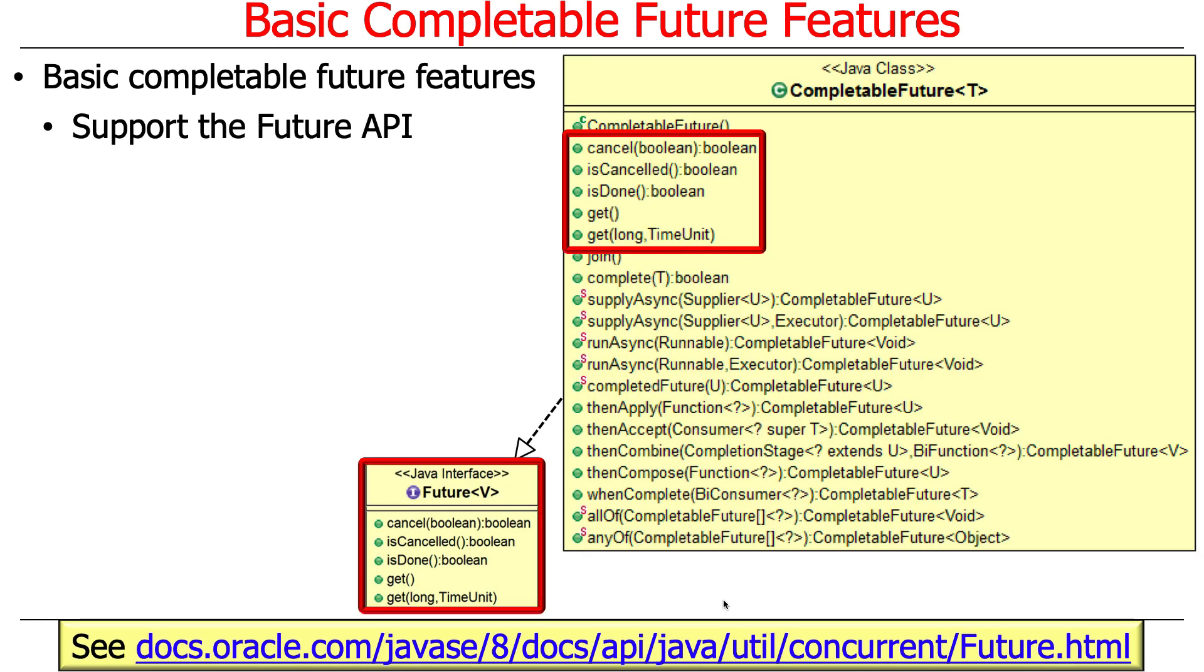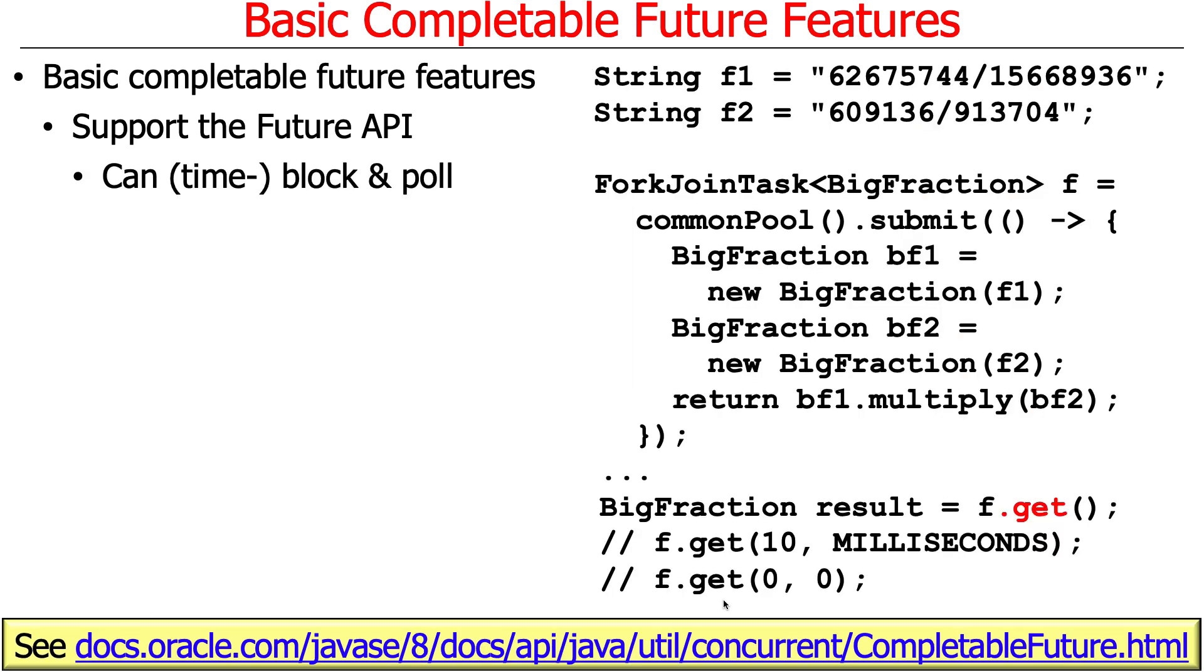As we talked about before, completable future implements the Future API. Remember we had Java Futures from the Java 5 version around 2004, and they gave you very simple capabilities to essentially cancel a future, check if it's canceled, check if it's done, and then get the results when the asynchronous computation is finished.